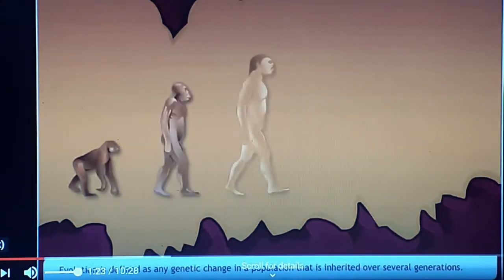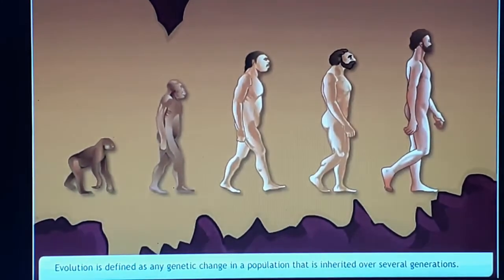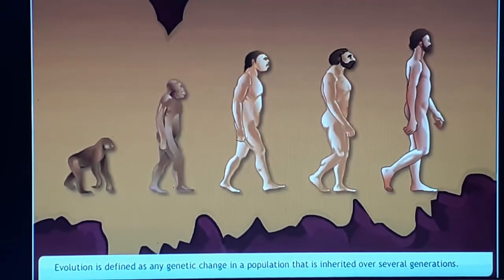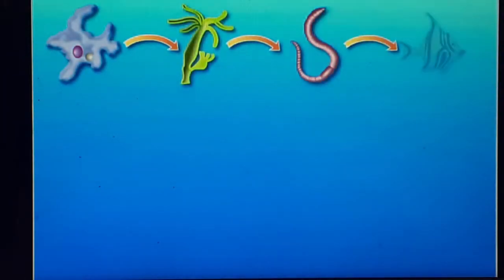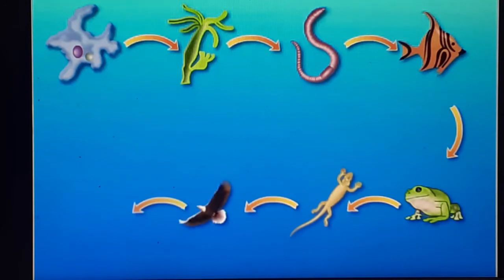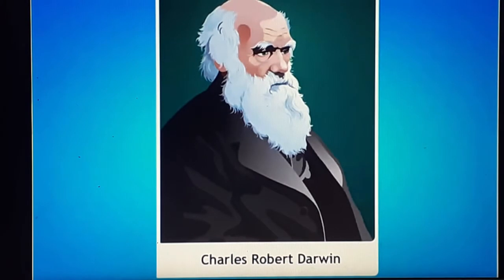We can also define evolution as any genetic change in a population that is inherited over several generations and passed on. Some scientists believe that life developed in a linear form from simple to complex — from amoeba, gradually to complex organisms, up to human beings.